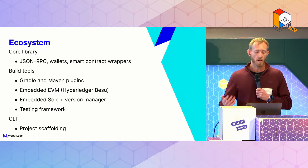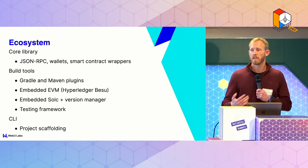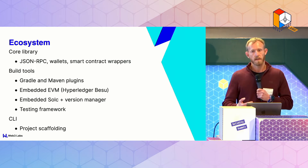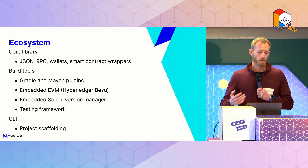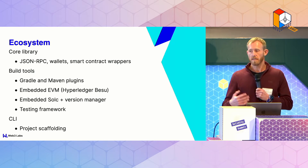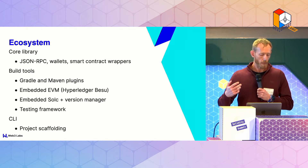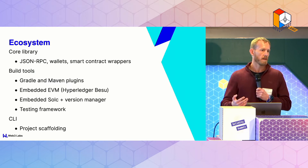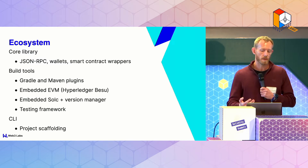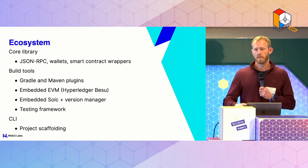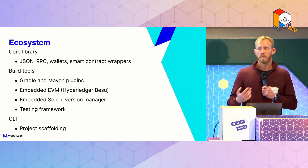Over time this has grown to encompass other things, such as Gradle and Maven, which are the two main build tools used on the JVM platform — they have Web3J support now. We also have an embedded EVM using Hyperledger Besu. What this means is you can write unit tests that actually execute within the JVM runtime on your machine when you're developing code, so you're not having to go off and talk to nodes. You don't need to run any additional node infrastructure, which is quite a key point — the last thing we want is people to have to spin up a node in order to do development.